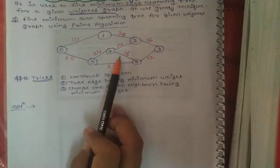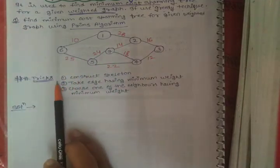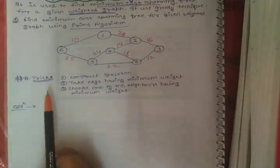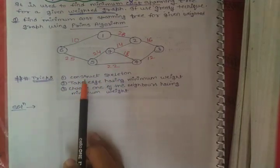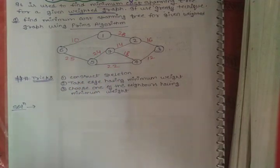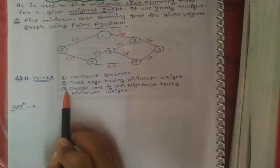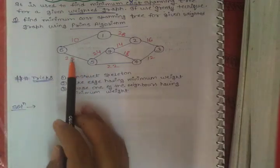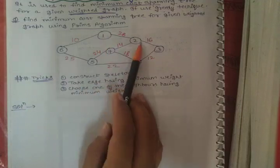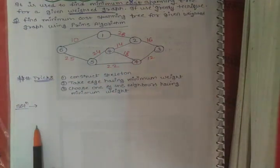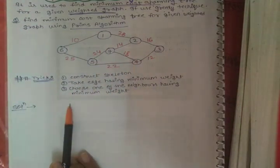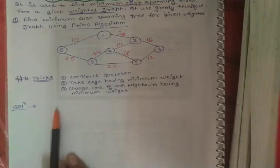The solution of this graph is as follows. First, according to the tricks mentioned, we will construct a skeleton. You don't have to write all these intermediate things in the exam - I have written them just for your understanding. The skeleton should be constructed to match the original graph: if node 6 is written here we write 6, if node 1 is written here we write 1 - we will not swap them.